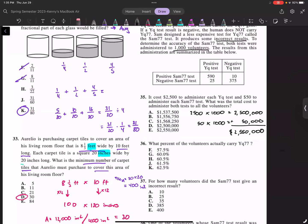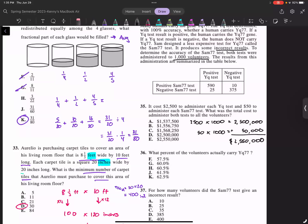To determine the accuracy of the SAM77 test, both tests were administered to 1,000 volunteers. The results are in this table below showing the overlap of positive-positive, negative tests, and so forth. It costs $2,500 to administer each YQ test and $50 to administer the SAM77 test. What was the total cost to administer to all volunteers? How many volunteers were there? 1,000. You did both. So first you have 2,500 times 1,000, that's 2.5 million. Then $50 times 1,000 is 50,000. Adding them up, you get $2,550,000.